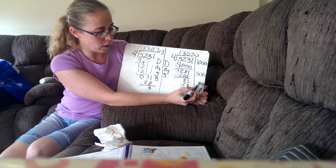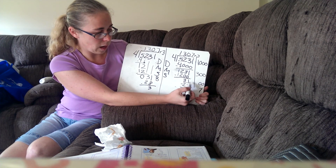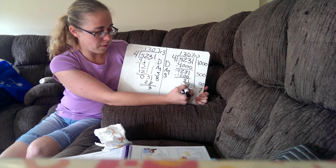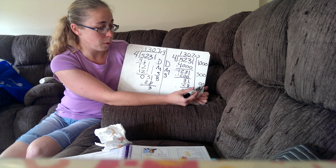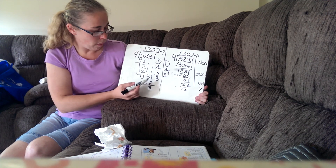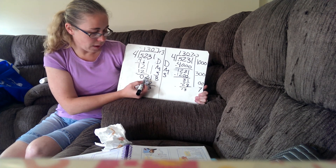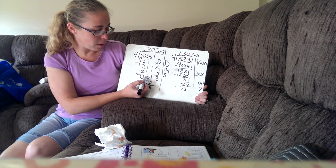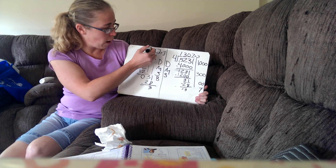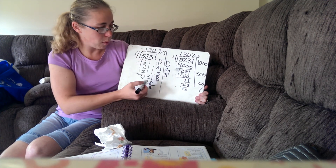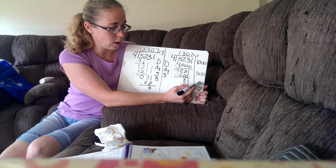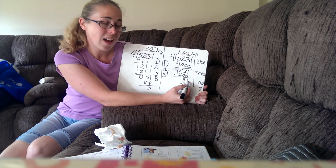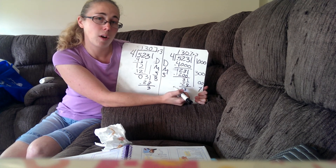Now that we've done the partial quotients, we have to put them back together: one thousand three hundred and seven with a remainder of three. Either way it works — you just stick zeros in there. When there's not enough in the tens column to divide, you put a zero. You add the zero and bring the next one down. Over here, you just add the zero and look at the next place value.